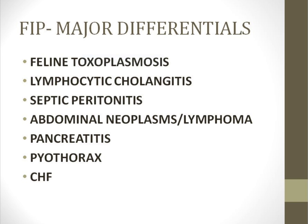Lymphocytic cholangitis can cause high-protein effusion in the abdomen, which could also give a positive Revolta test, and there can be jaundice as well. However, because it is a case of cholangitis, there will be elevated ALP (alkaline phosphatase) and GGT (gamma-glutamyl transferase), whereas in FIP there is no dramatic change in ALP and GGT.